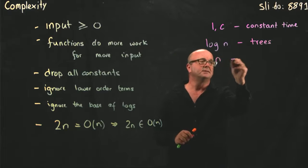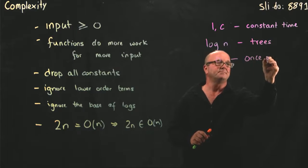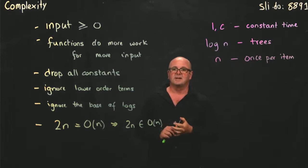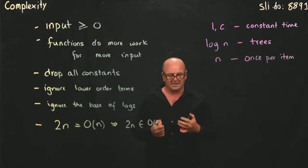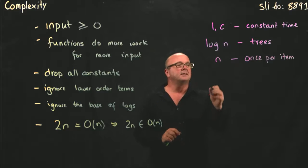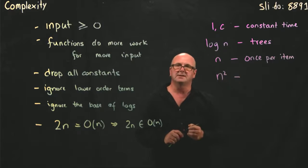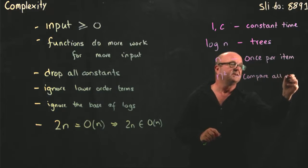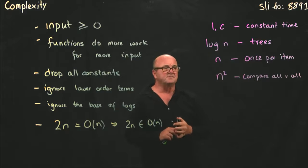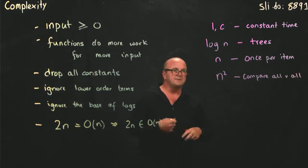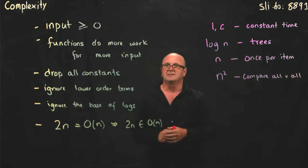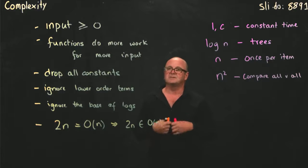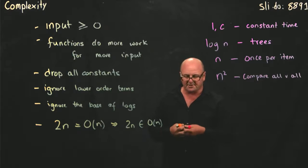We have n complexity, which is where you do something once per item. If you iterate through a list, if you're going through a linked list, that's n complexity. We have n squared complexity, which is when you're comparing everything to itself. For example, if you do a sort algorithm really ineffectively, like the bubble sort, the bubble sort algorithm is n squared complexity. It's really a bad way to do things. There are much better sorting algorithms that we'll talk about that don't require n squared complexity. But oftentimes with real world data, that's something you run into.